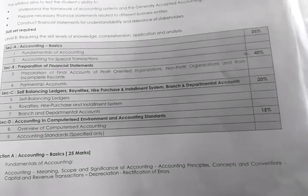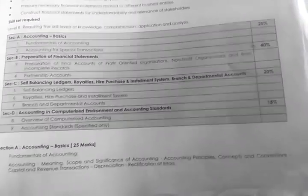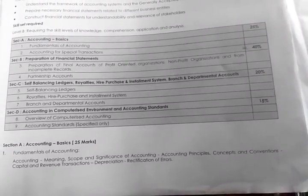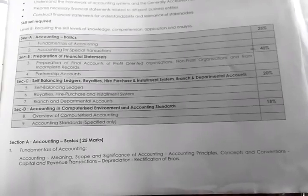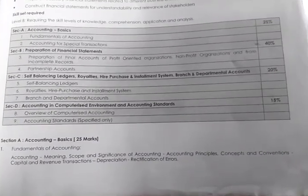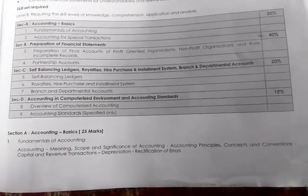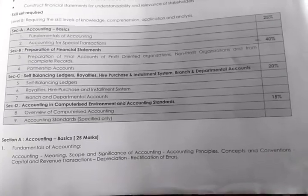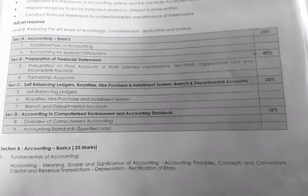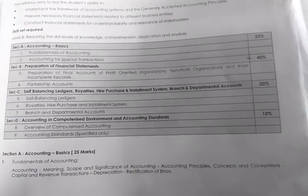Section B also includes partnership accounts. Section C is given 20% weightage, covering self-balancing ledger, royalties, higher purchase and installment system, and branch and department accounts. Section D covers accounting in a computerized environment and accounting standards, given 15% weightage. Overview of computerized accounting is a new chapter added in the 2016 syllabus.